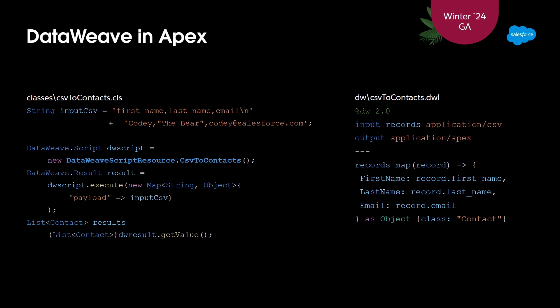DataWeave in Apex is a new feature that is now GA in Winter 24. DataWeave is MuleSoft's language to read, transform, and write data from one format to another - a functional language, very concise and accurate. To use DataWeave in Apex, you load your DataWeave scripts into the org, reference them directly from Apex, pass in the payload, and get results back. In this example, we're taking a CSV file and directly mapping it into Contact objects. This lets Apex developers focus more on business processes rather than getting data into the right format.